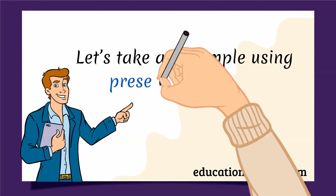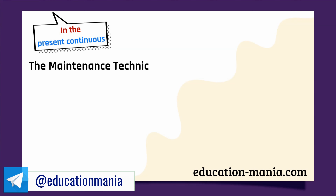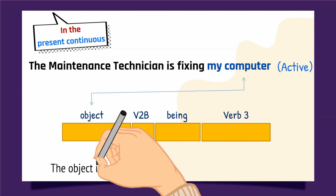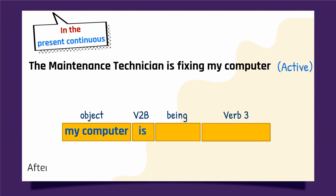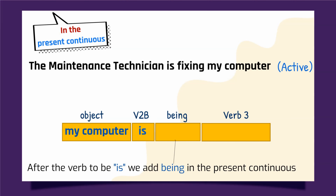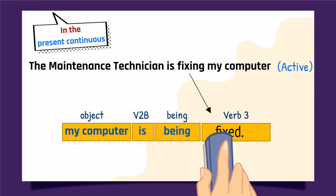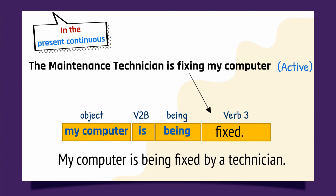Let's take an example using present continuous: 'The maintenance technician is fixing my computer.' The object is 'my computer' — move it to the front. In the present continuous we need to add 'being'. Verb 3 of 'fix' is 'fixed'. Result: 'My computer is being fixed.' Or we can say: 'My computer is being fixed by a technician.'